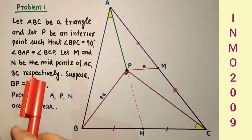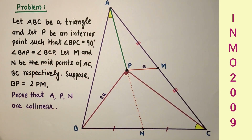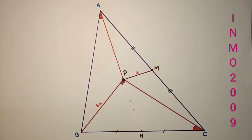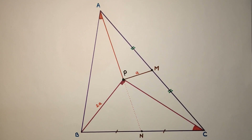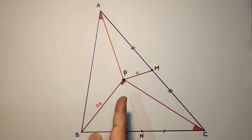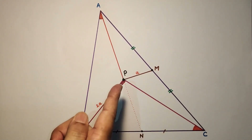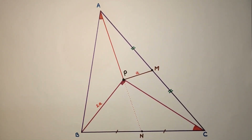That means we have to prove that angle APN is a straight angle, that is 180 degrees. To prove that points A, P and N are collinear, we need some constructions: extend CP up to D such that CP is equal to PD, and join BD. These two constructions are required to prove that points A, P and N are collinear.